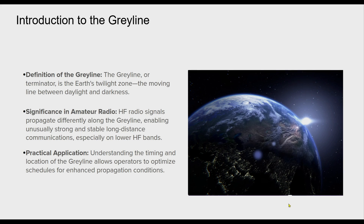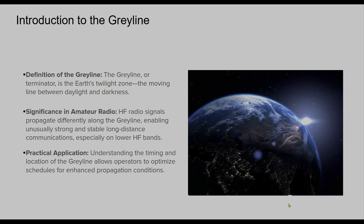Let's define the gray line, highlight its significance, and discuss its practical applications for improving DX contacts. The gray line represents the Earth's twilight zone, where daylight meets darkness. It's crucial in amateur radio for taking advantage of unique propagation opportunities that this transition offers.